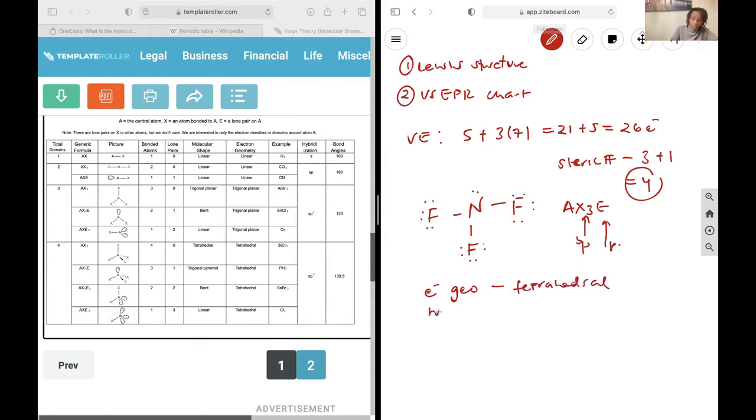So, the molecular geometry will include how many bonding pairs and lone pairs I have, and so that's when I'm going to go to my specific generic formula or account for the fact that I have one lone pair, and so that is going to be trigonal pyramid.